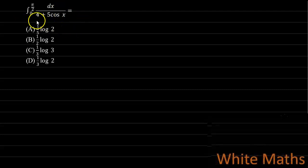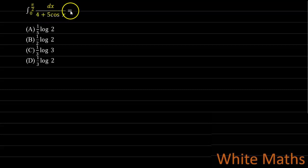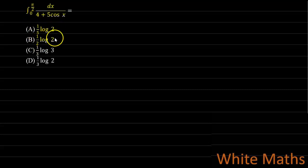Hello students. In this section we will solve a question from the topic of integrals, specifically from the subtopic of evaluation of the definite integral by substitution method. The integral is limit 0 to π/2 of dx over (4 + 5cosx). We have to find the value of this integral, and the options are 1/5 log2, 1/2 log2, 1/3 log3, and 1/3 log2.